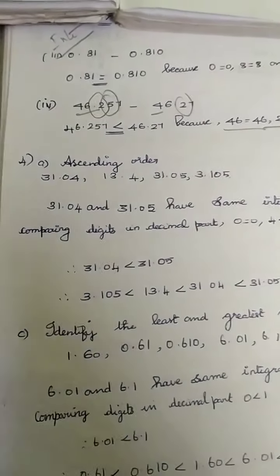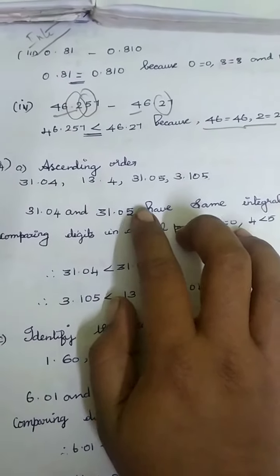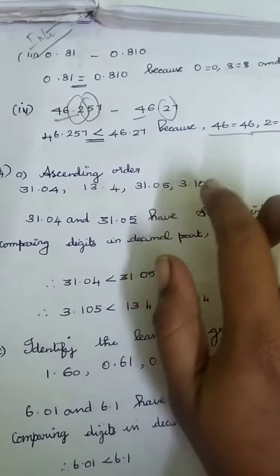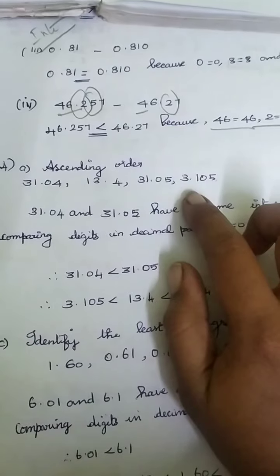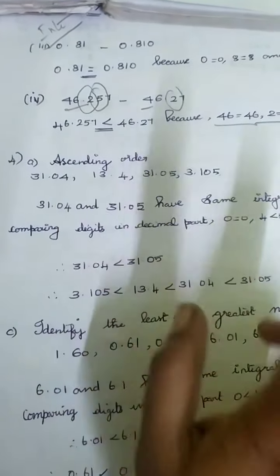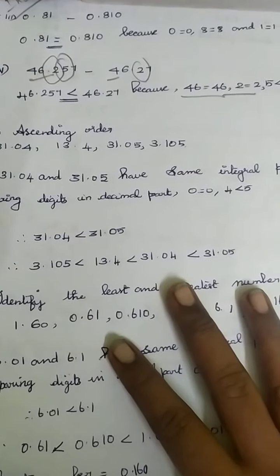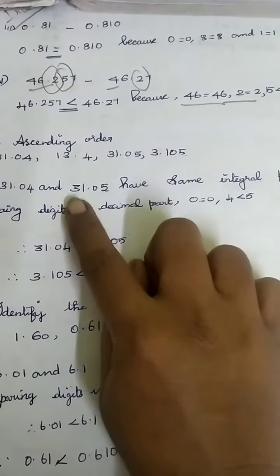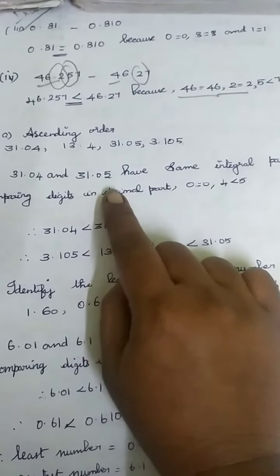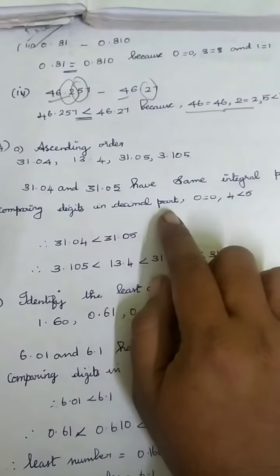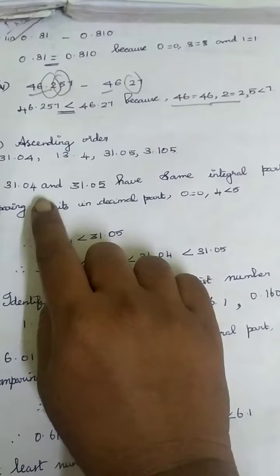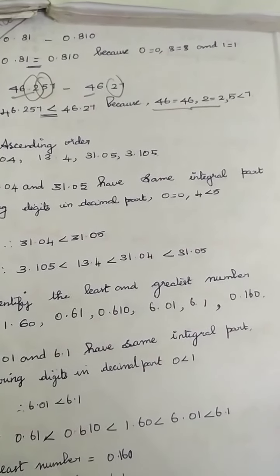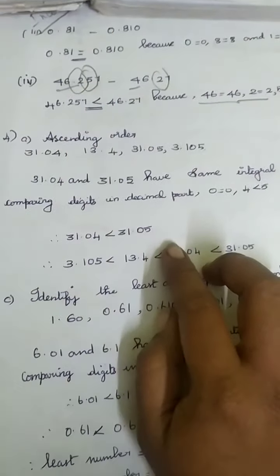First we select the smallest number by checking the integral parts: 31, 13, 31, 3. Obviously 3 is the smallest, then 13. After that we have 31 and 31 with the same integral part, so we compare the tenths place — both have 0, equal. Then compare the hundredths place: 4 and 5. Four is smaller than five, so 31.04 is smaller than 31.05.